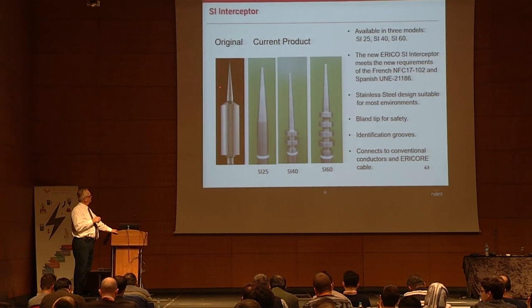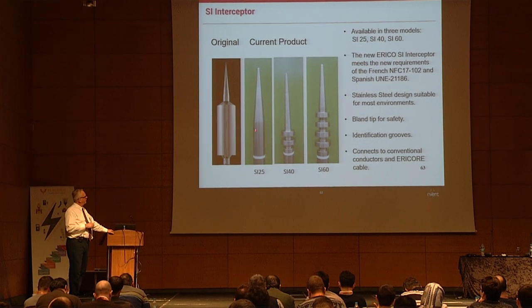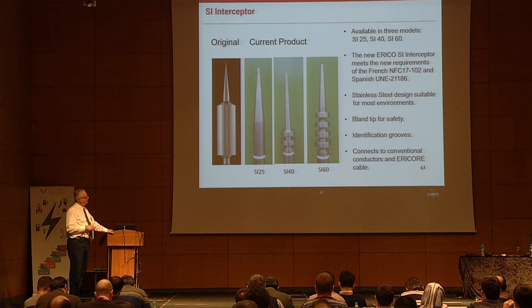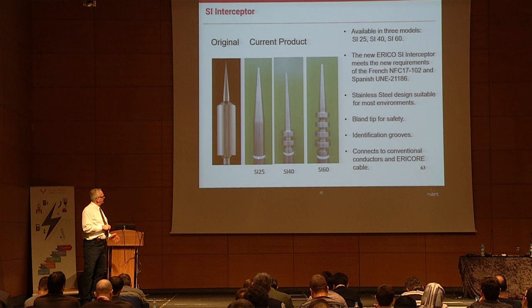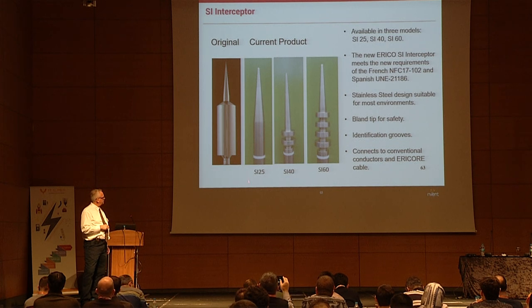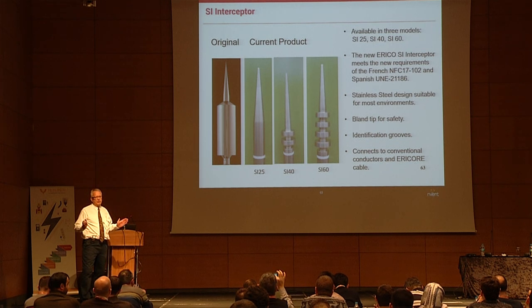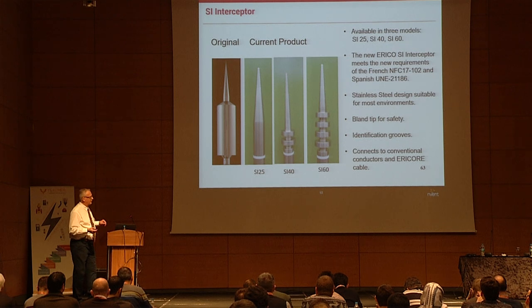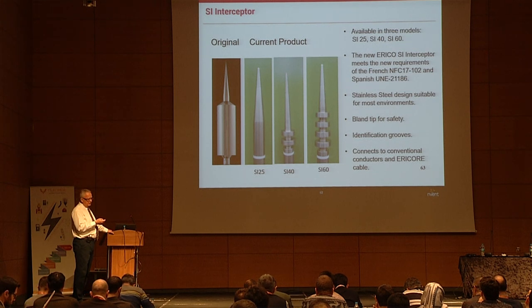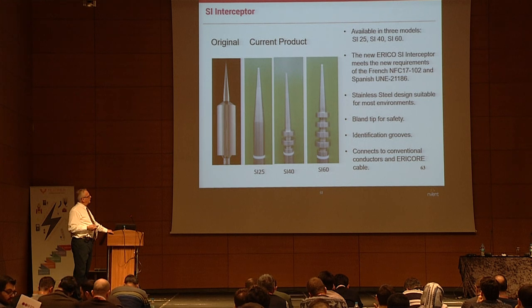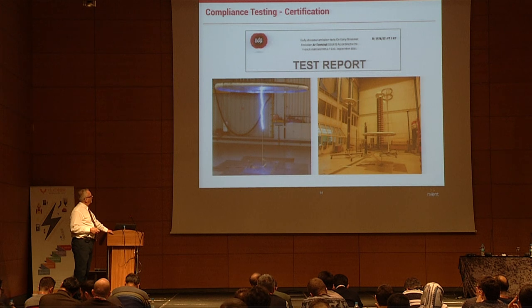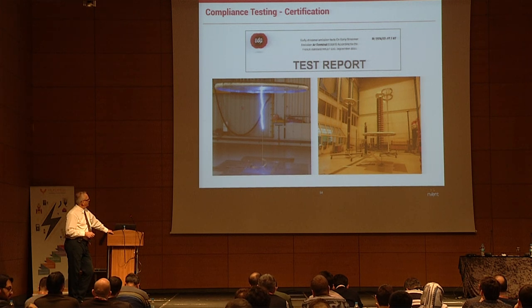Erico had the older style SI interceptor for the old standard. For the new standard we have SI 25, 40, and 60 models. The rings on the design distinguish the rating of the triggering system — SI 60 has four rings, another has two rings, and one has no rings — purely for the end user to identify the trigger mechanism rating. It's made from 316 stainless steel, environmentally durable, and has a full test report for performance.